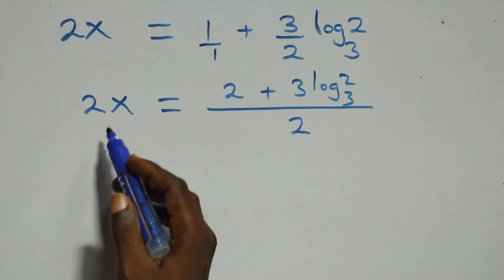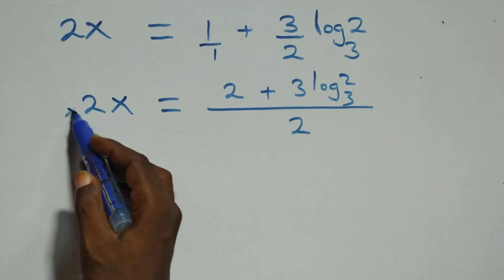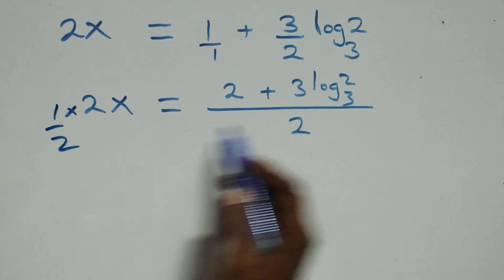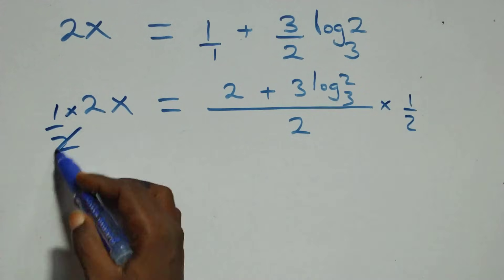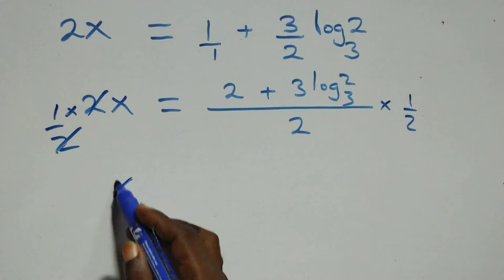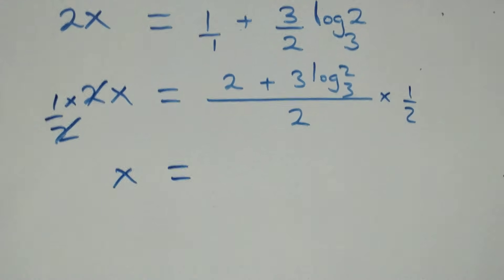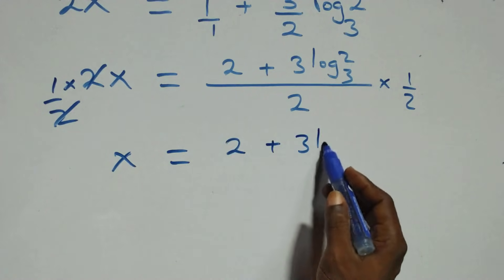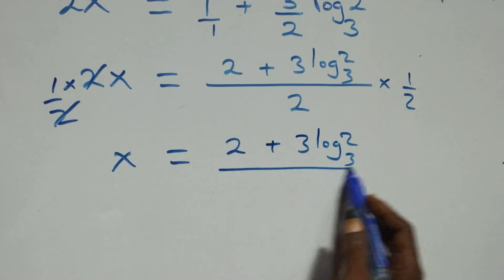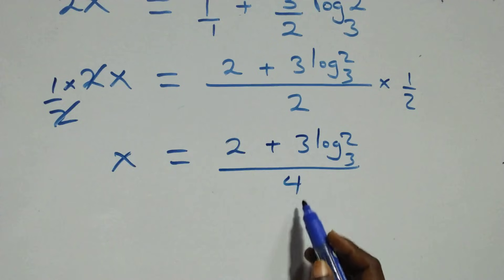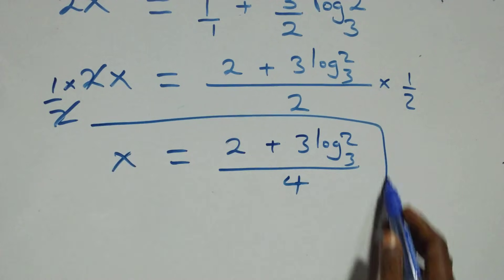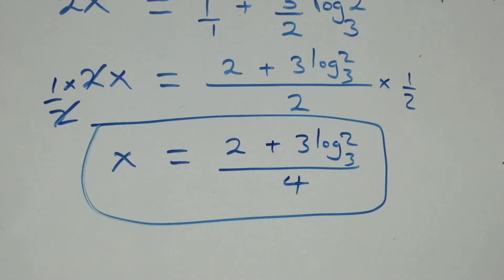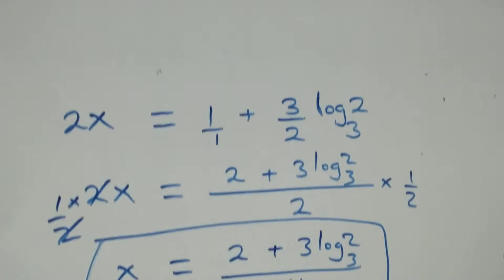Then here we multiply each side by 1 over 2. The 2 cancels, and we have x equals to 2 plus 3 log 2 base 3, all over 4. This is how we get the value of x as 2 plus 3 log₃2, all over 4.